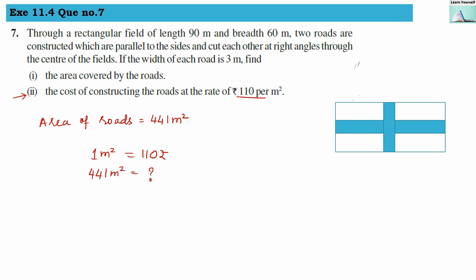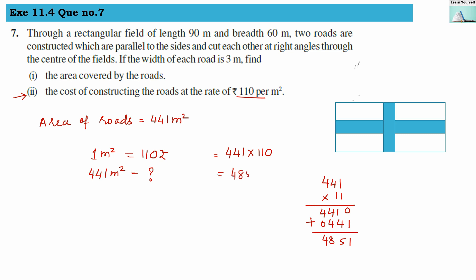Cost = 441 × 110 = ₹48,510. So ₹48,510 will be the cost for constructing these roads.